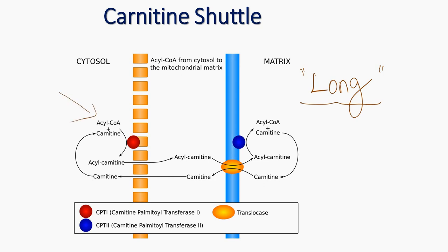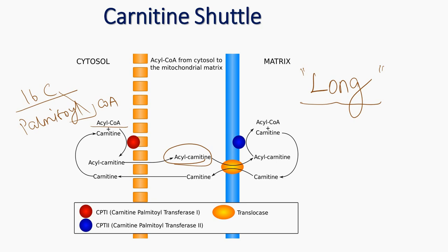This is the cytosol. Acyl-CoA is a common name for fatty acid groups — for example, it can be palmitoyl-CoA, which is a 16-carbon fatty acid. Acyl-CoA combines with carnitine to produce acyl-carnitine. This acyl-carnitine can enter the outer mitochondrial membrane and enters through translocase.